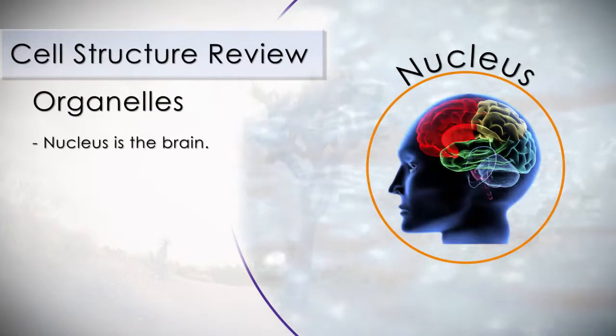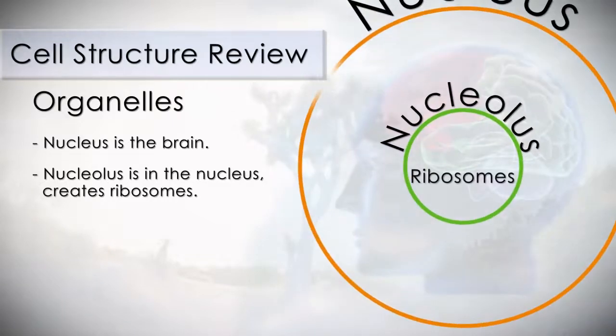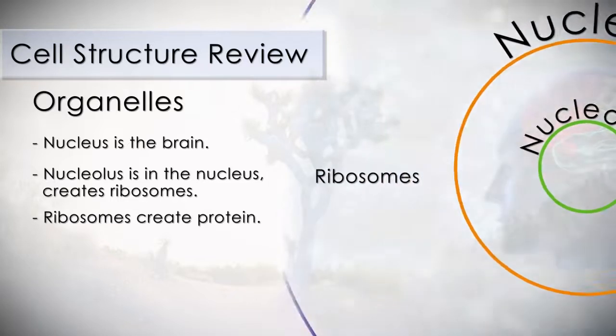The nucleus is the brain of the cell. The nucleolus is located within the nucleus and creates ribosomes. Ribosomes move from the nucleus to the cytoplasm, where they serve as sites for protein synthesis.